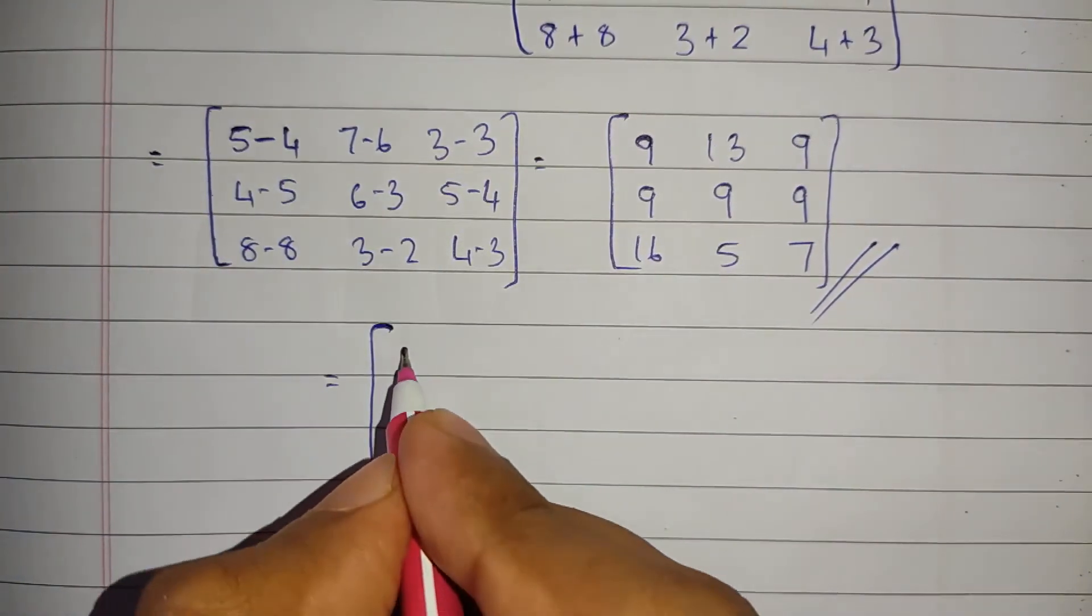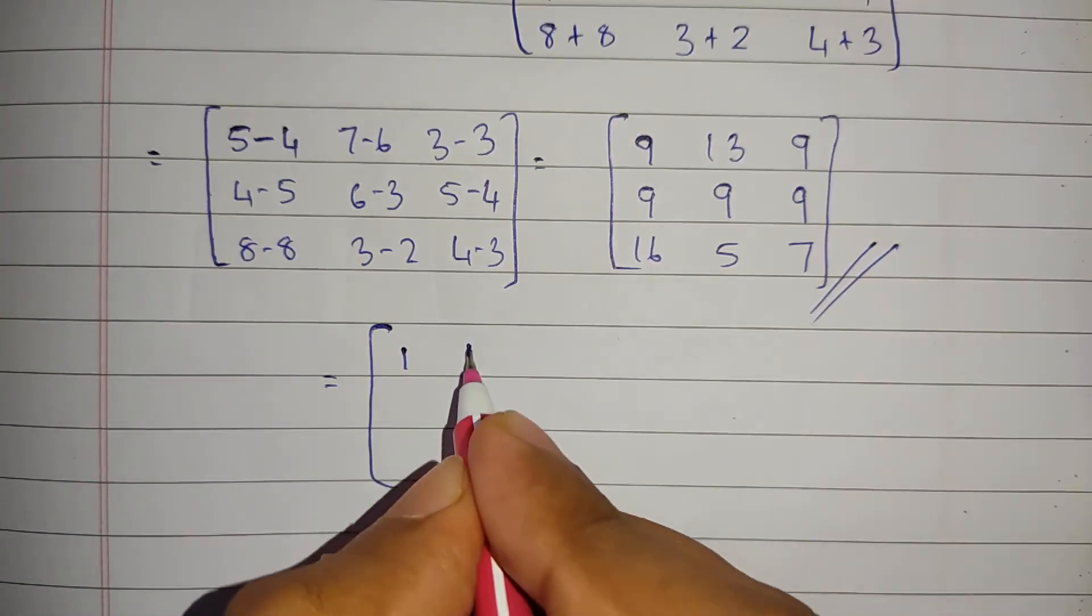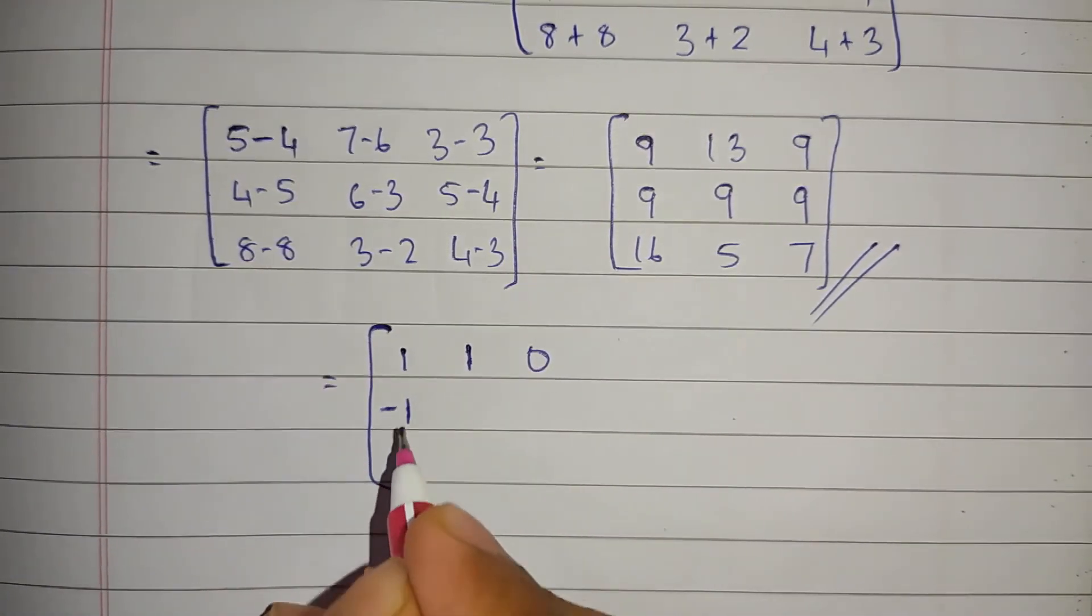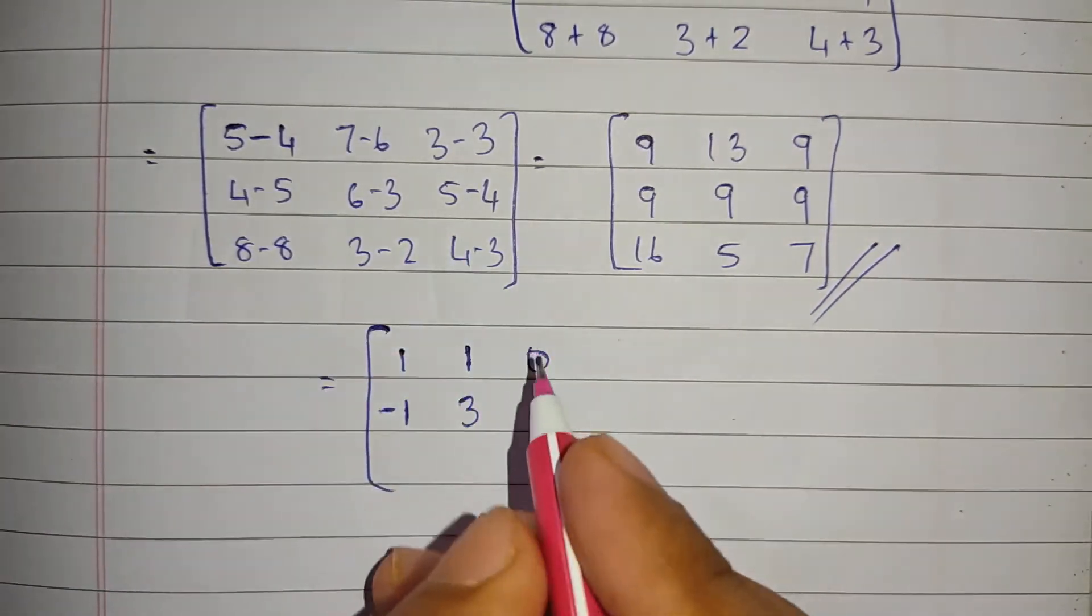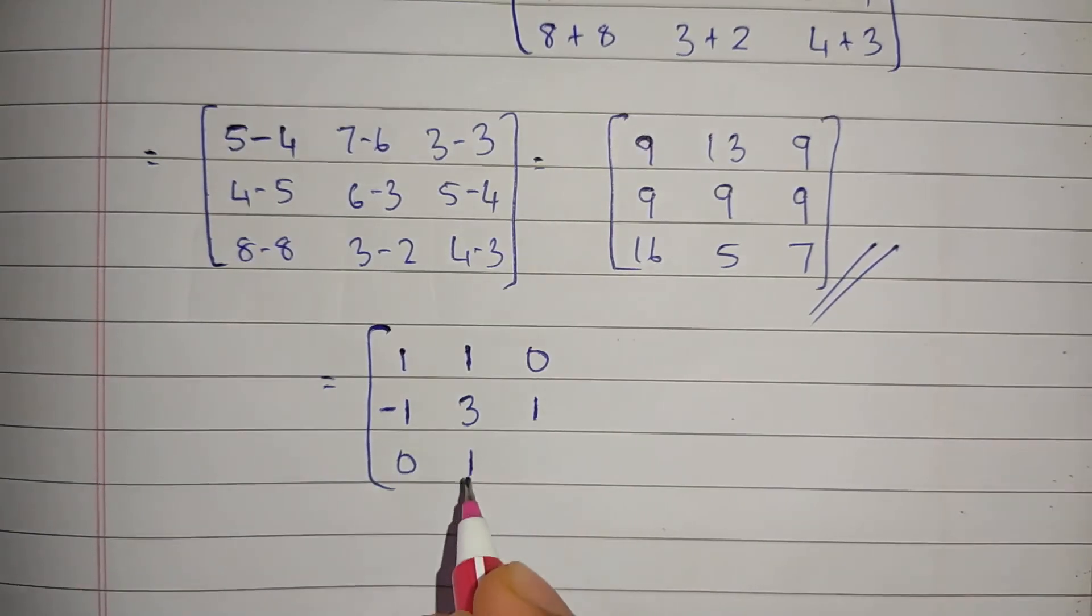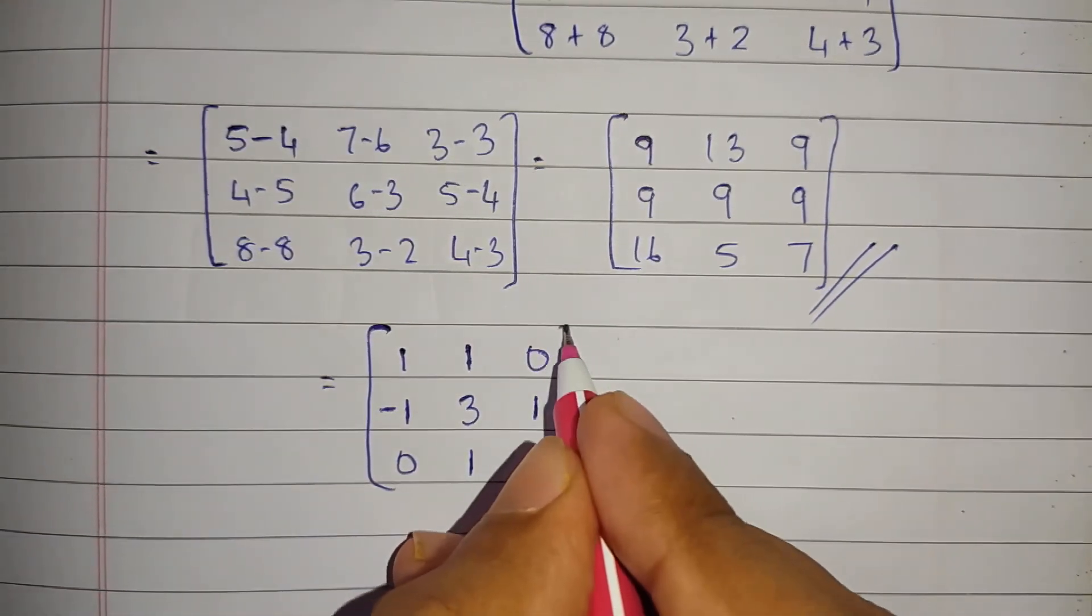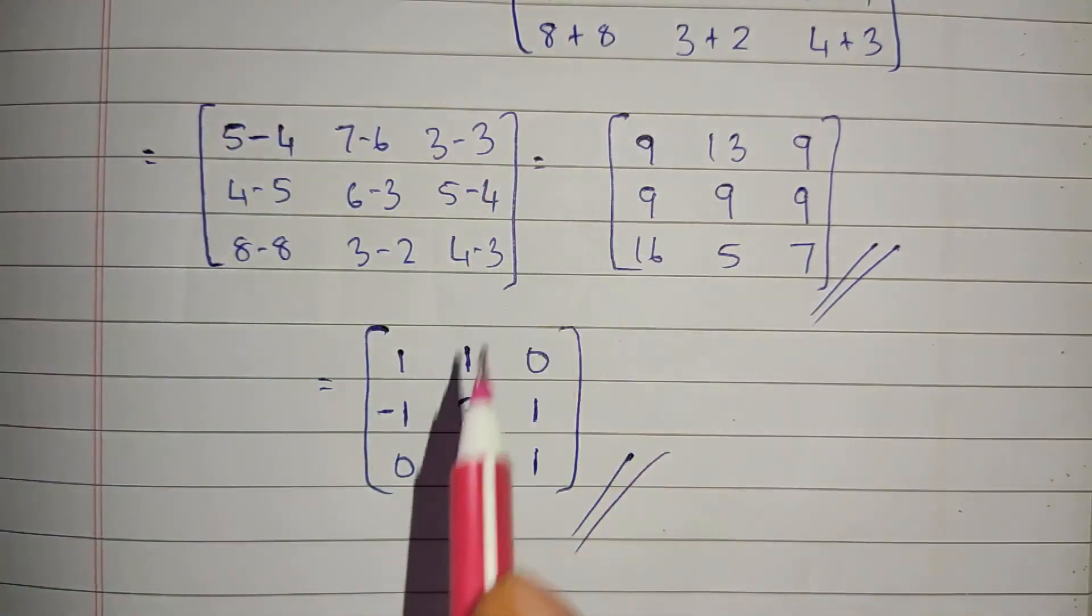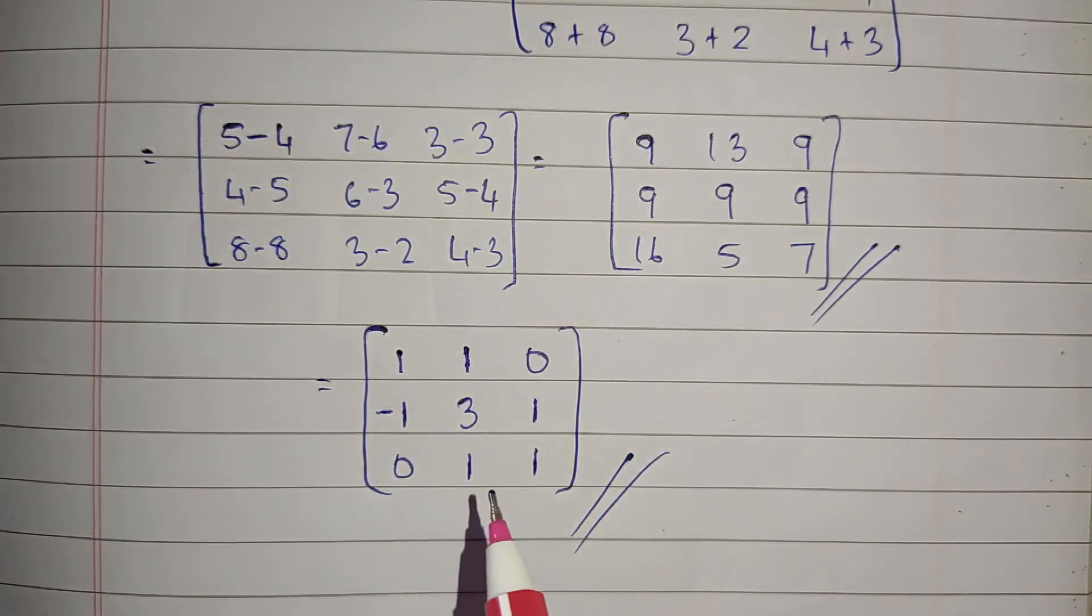5 minus 4 is 1, 7 minus 6 is 1, 3 minus 3 is 0, 4 minus 5 is minus 1, 6 minus 3 is 3, 5 minus 4 is 1, 8 minus 8 is 0, 3 minus 2 is 1, 4 minus 3 is 1. So this is the answer when we subtract this matrix from that.